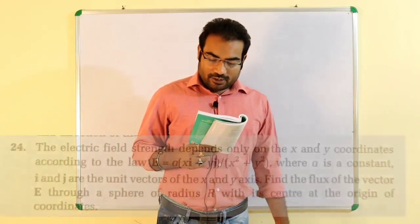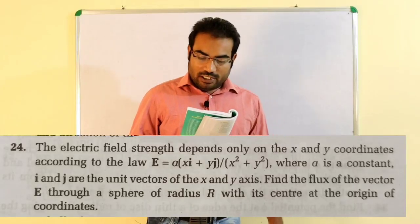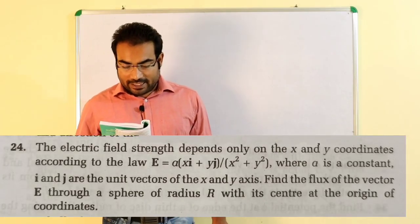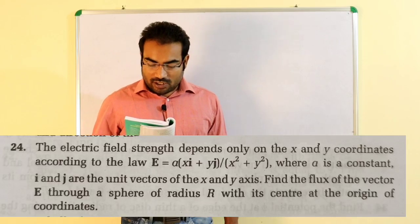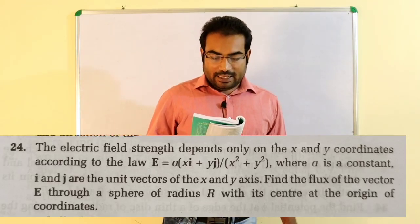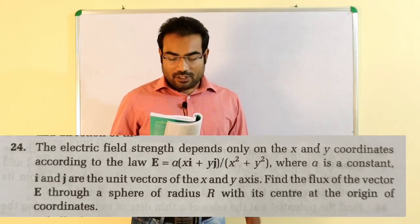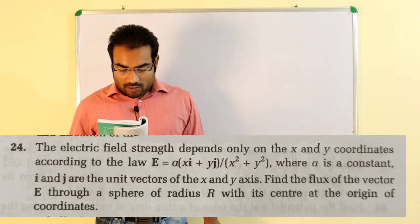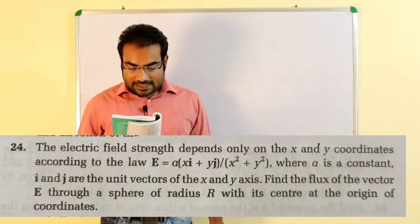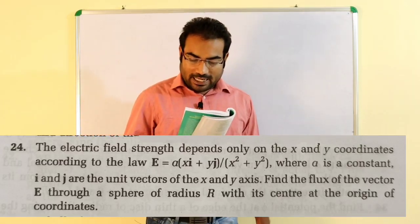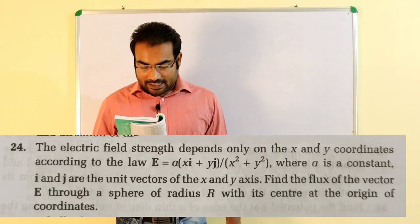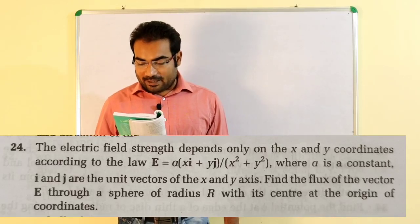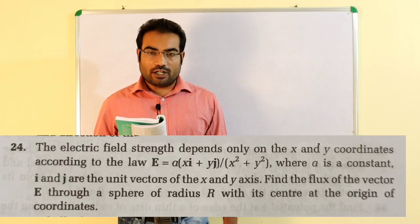The electric field strength depends only on the x and y coordinates. According to the problem, the electric field vector E is given as A/(x²+y²) times (x i-cap + y j-cap), where A is a constant and i, j are the unit vectors of the x and y axes. We need to find the flux of vector E through a sphere of radius R with its center at the origin of coordinates.